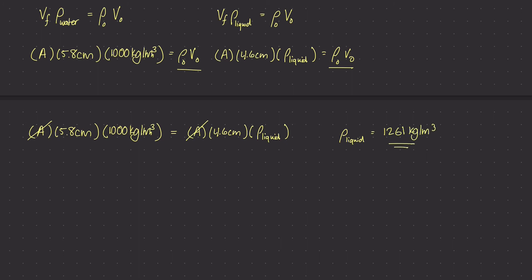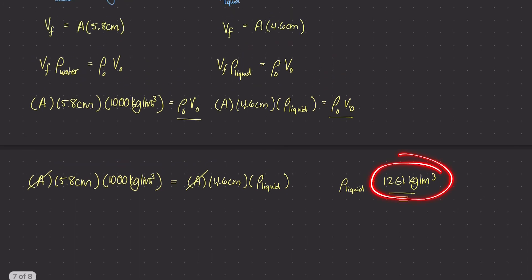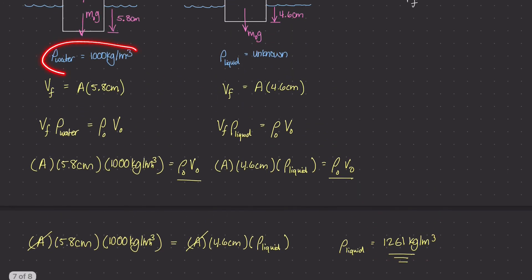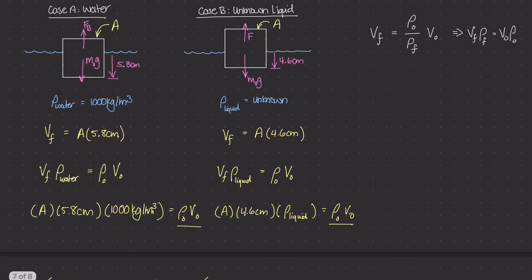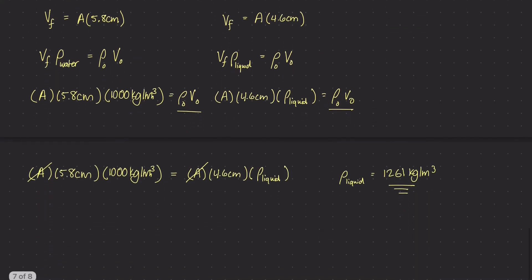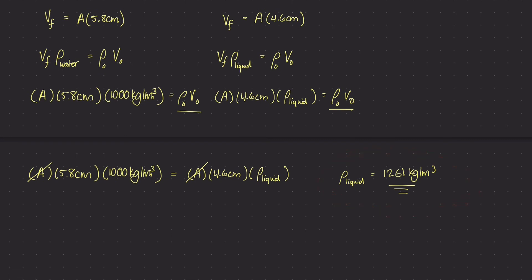The mass density of this unknown liquid is actually a little bit higher than the mass density of water, and that makes sense — because when we place the block in this unknown liquid, it does not submerge as deep as it does in water. So the mass density of this unknown liquid is about 1,261 kilograms per meter cubed.